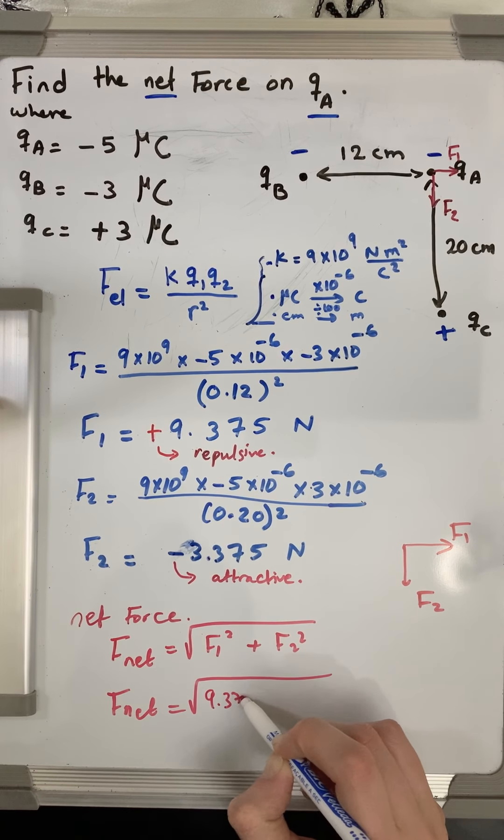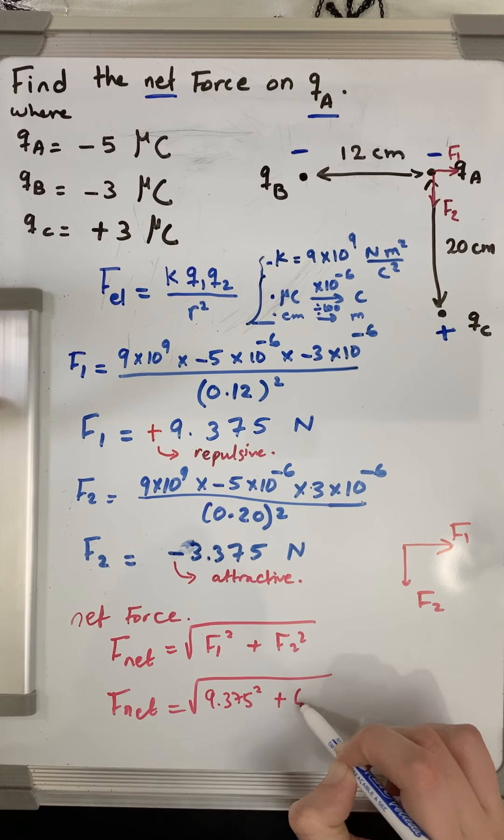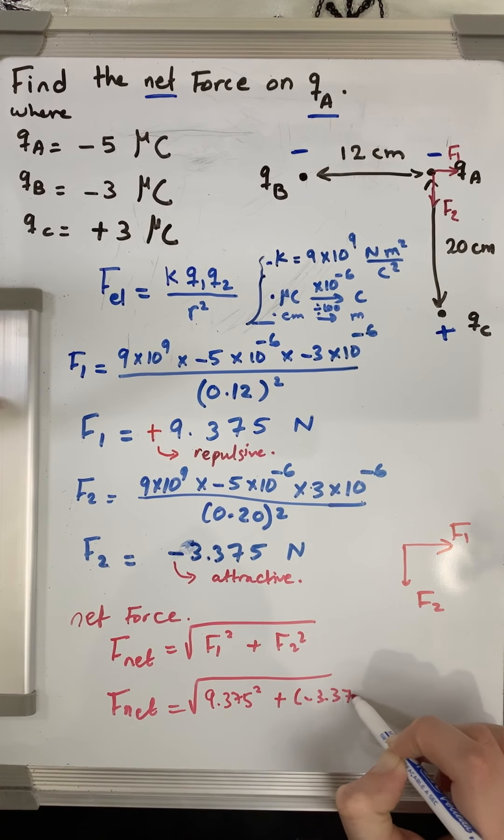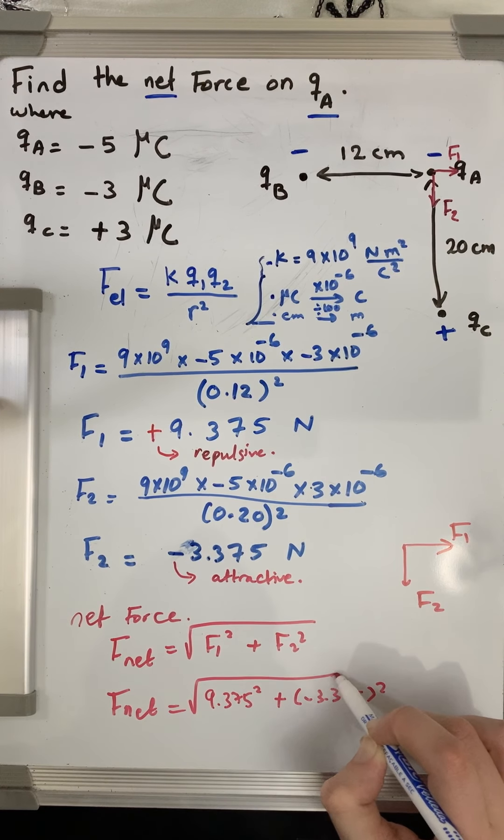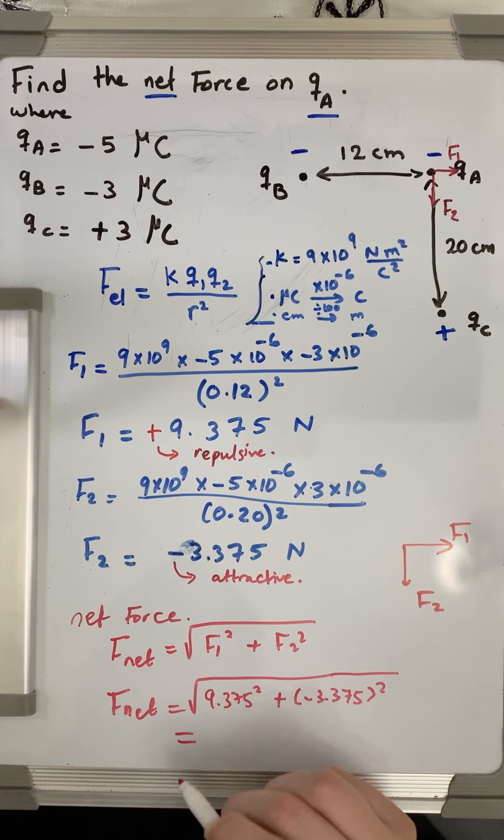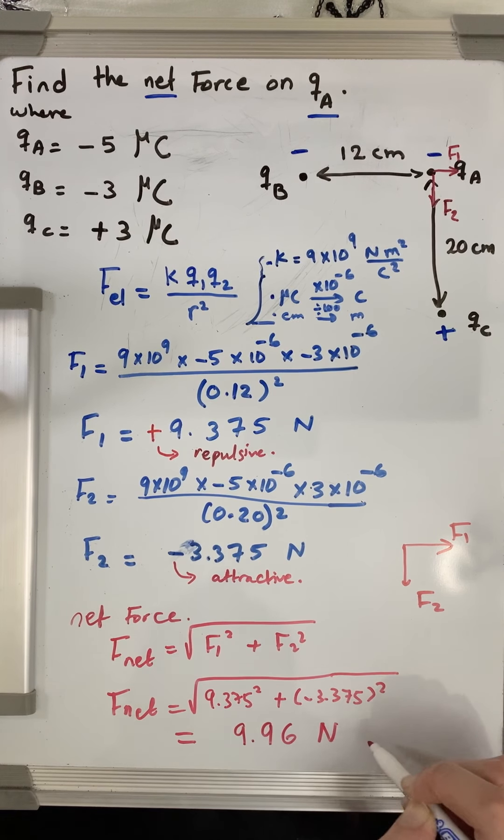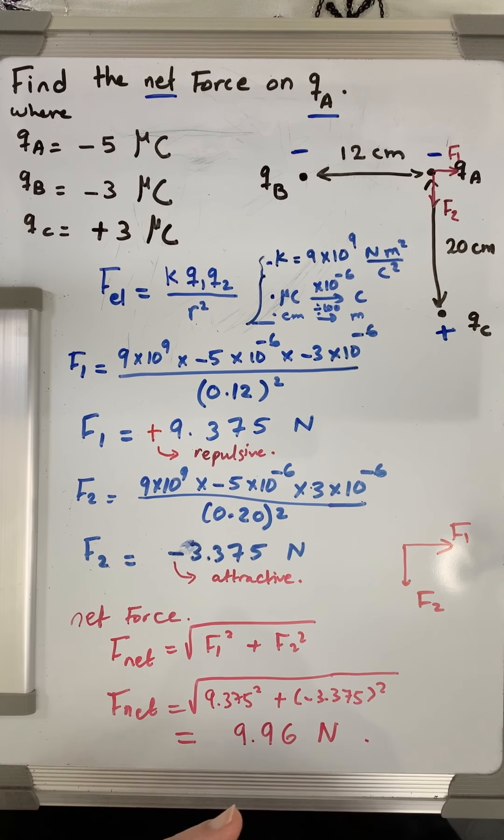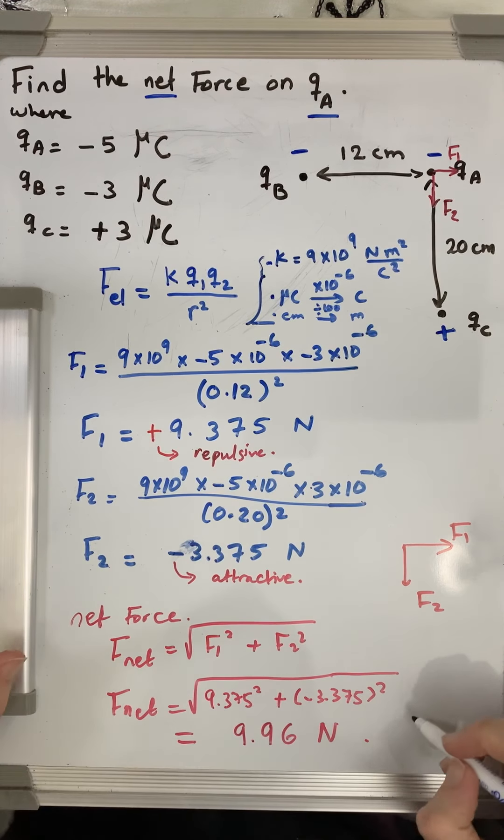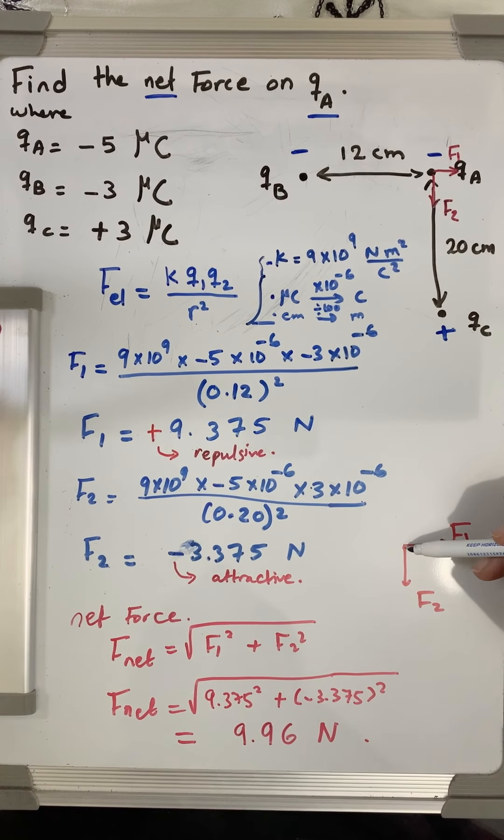9.375 squared plus negative 3.375 squared. Putting these numbers on the calculator, we will get that the net force on charge qa is 9.96 newtons. Now this is the magnitude, this is the magnitude of the net force.